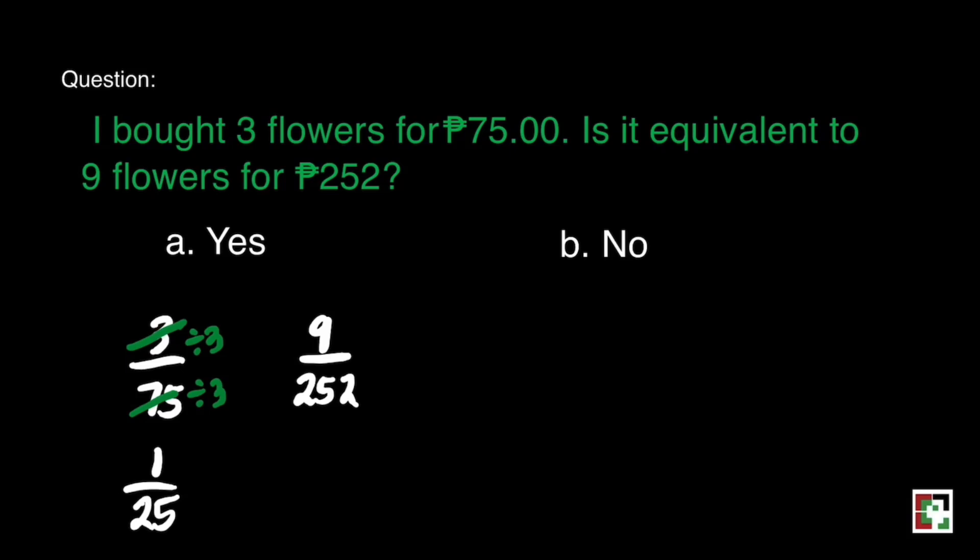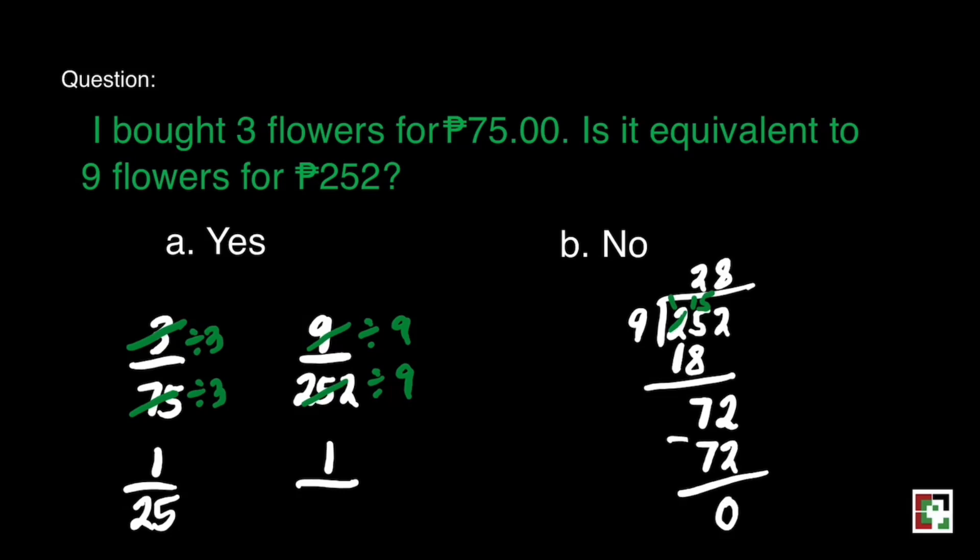How about for 9 over 252? It can be divided by 9. So 9 divided by 9 is equal to 1, and 252 divided by 9 is equal to 28. So the lowest term for this fraction is 1 over 28. Making 1 over 25 and 1 over 28 not equivalent fractions. Our final answer is B, which is no.